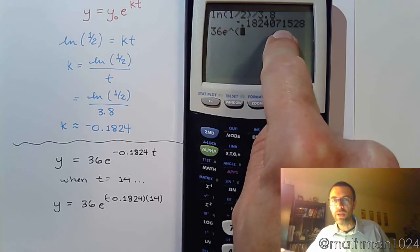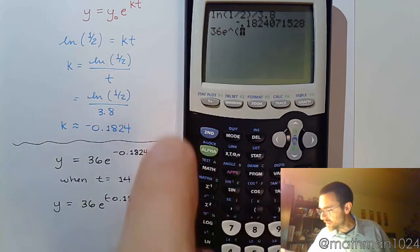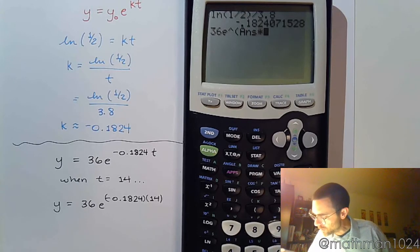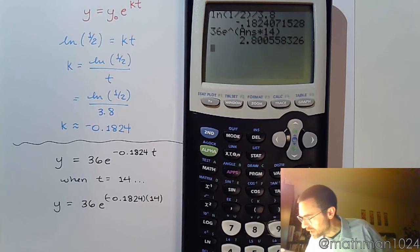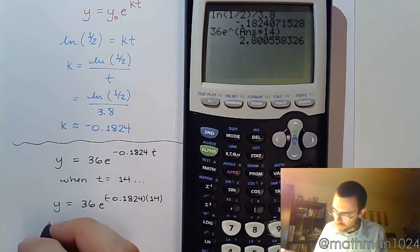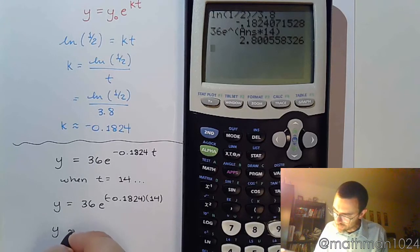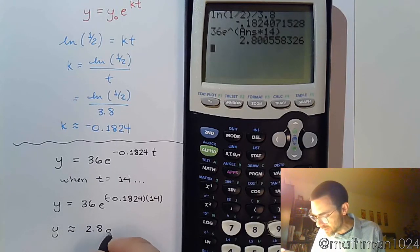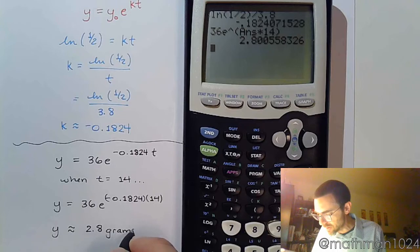Now, I didn't store this in for x, but what I can do is I can press second and the negative sign to just grab the answer times 14. And oh, look at that. There you go. You get 2.8. So the amount that is left is approximately 2.8 grams.